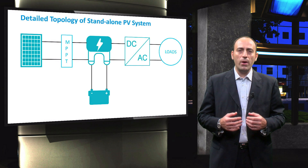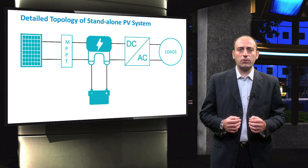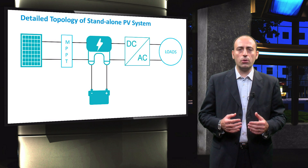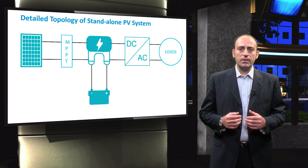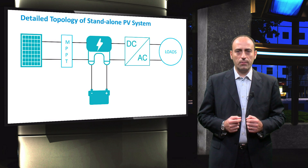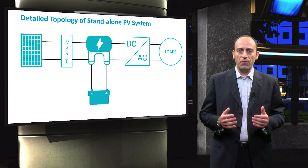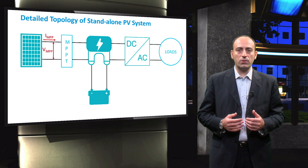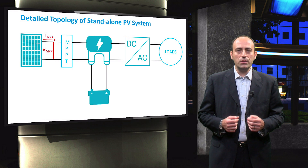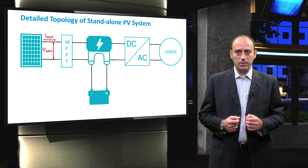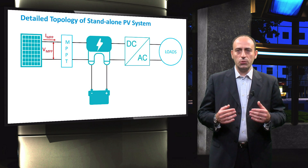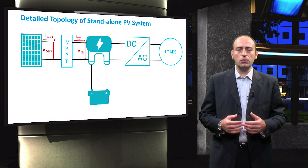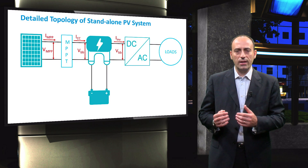To understand this, we have to first consider the net effect of all the components that charge or discharge the battery. The figure shown here is a detailed topology of the standalone PV system. It consists of the PV modules, characterized by its maximum power point current and voltage. This is due to an MPPT employed in the PV system. Then, you have the charge controller, which has three ports that connect it to the PV modules, inverter, and battery bank.